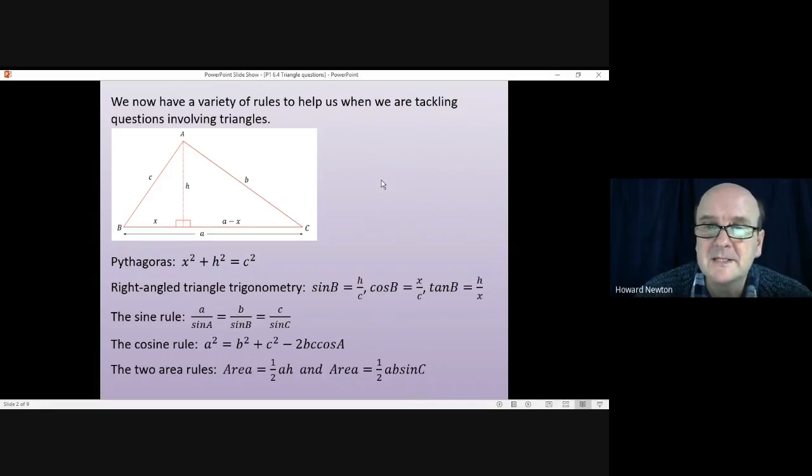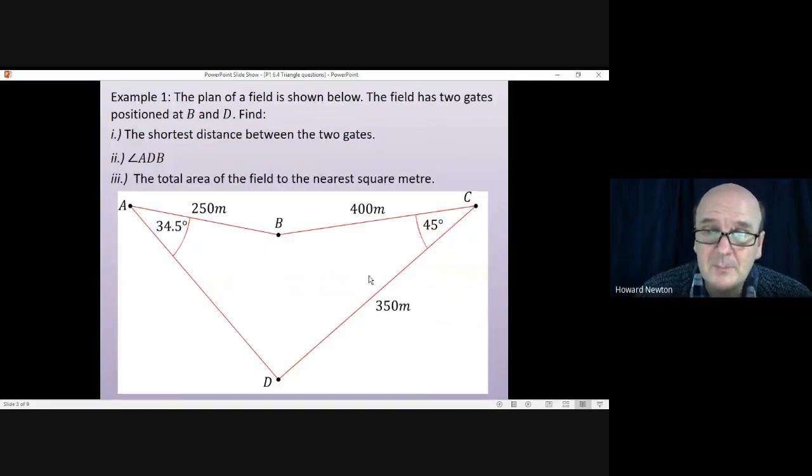Now we're just going to look at one example in this lesson, but it is a long example and quite a complex example and it uses most of those rules. Example 1: The plan of a field is shown below. The field has two gates, one at B and one at D. First we're asked to find the shortest distance between the two gates, then find angle ADB, and lastly work out the total area of the field.